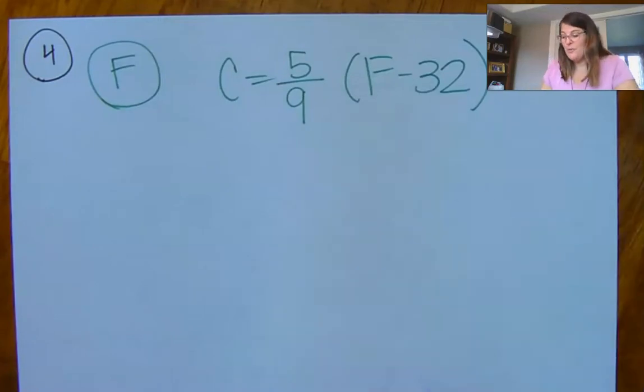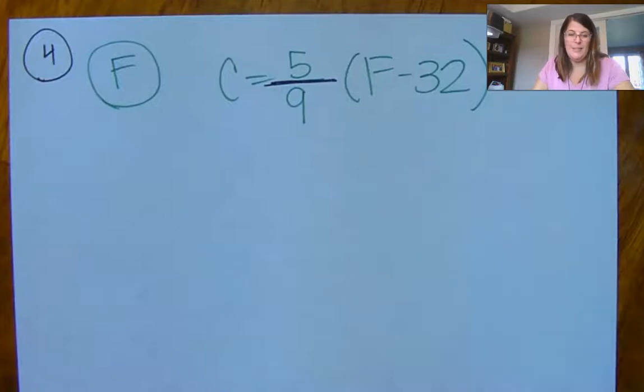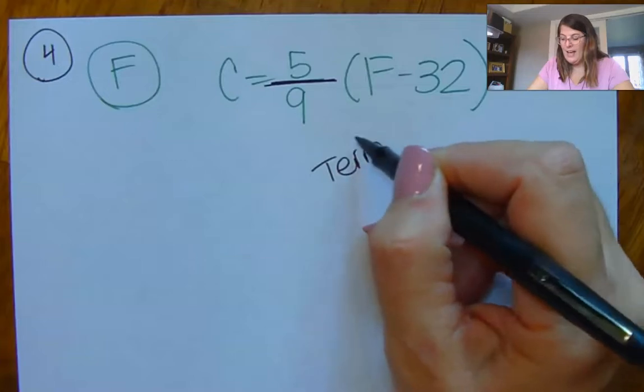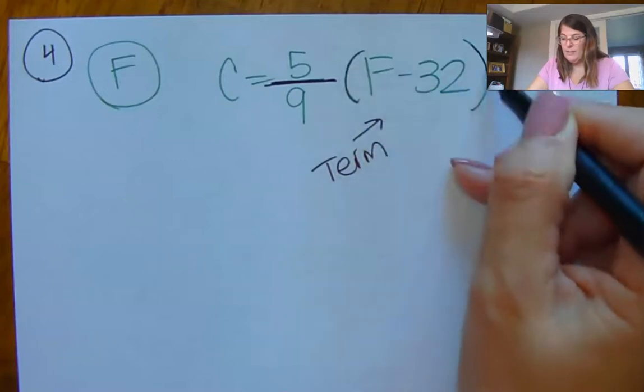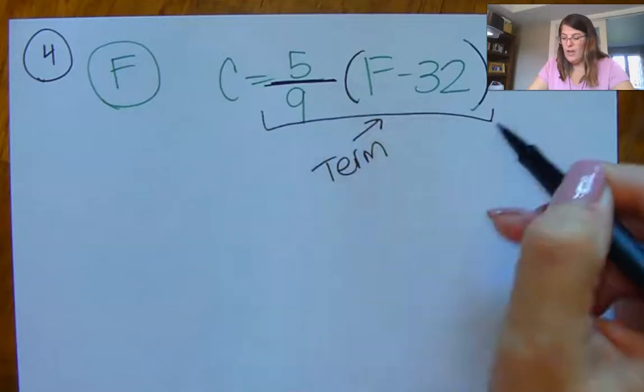if you were given the Celsius one and you want the Fahrenheit, then you'd have to solve for F, which is what we're doing right now. So first thing we want to look at is we see this fraction. This thing is one whole term on this side because of this parentheses making all this multiply. So this is all one giant term.